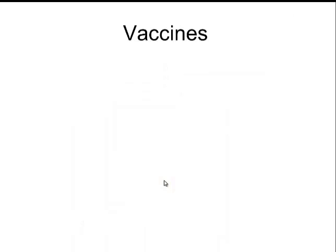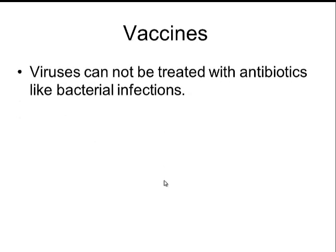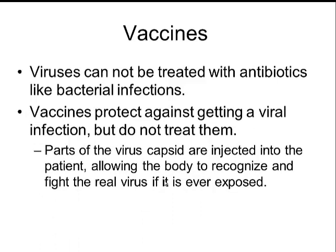We do have a way of protecting our cells against some viruses, and that is using vaccines. Viruses cannot be treated with antibiotics like bacterial infections — there's no medicine that kills most viruses. Instead, we use vaccines to protect against getting the viral infection in the first place. Parts of the virus's capsid get injected into the patient, allowing the body to mount a response and be ready to fight the real virus if ever exposed. If you got a flu shot, you were injected with little pieces of the flu, and if your body ever sees the real thing, it will be ready.